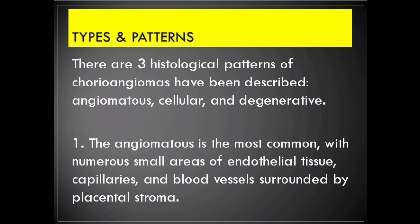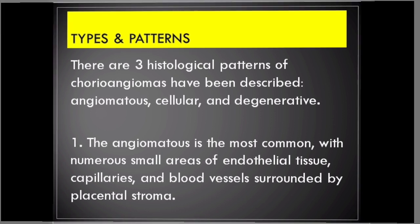There are three histological patterns of chorioangioma: angiomatous, cellular, and degenerative. The angiomatous pattern is the most common, with numerous small endothelial tissue, capillaries, and blood vessels surrounded by placental stroma.